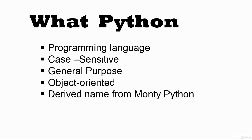In this lecture, we learned that Python is a programming language that is case-sensitive. It is a general-purpose language that can be used to perform a variety of tasks. We saw some famous websites that Python has been involved with, and we learned that Python is an object-oriented programming language that treats everything as an object. Python borrowed its name from the British comedy group known as Monty Python.